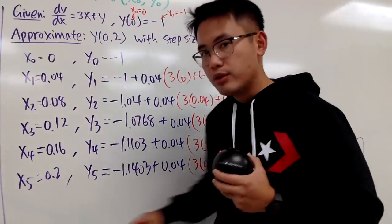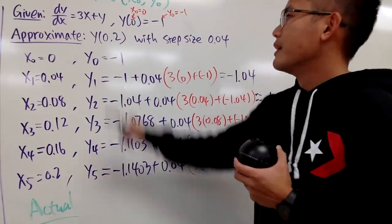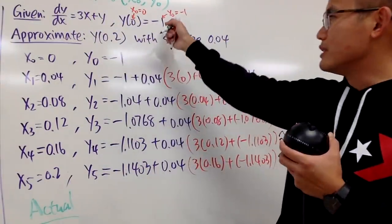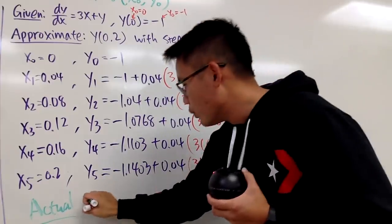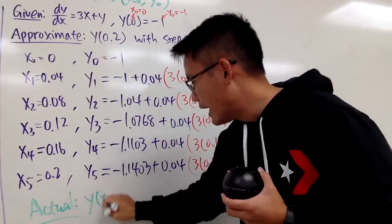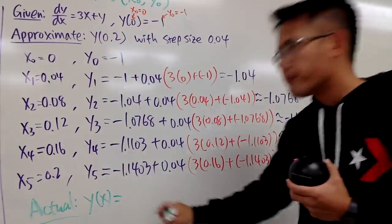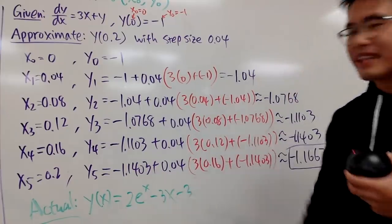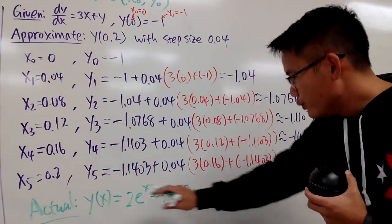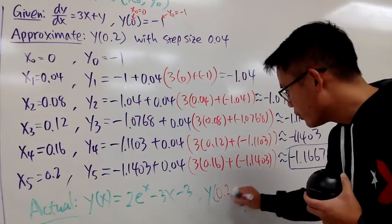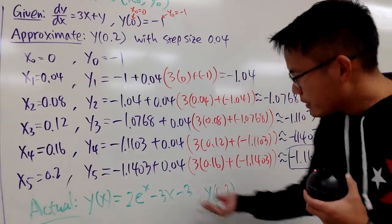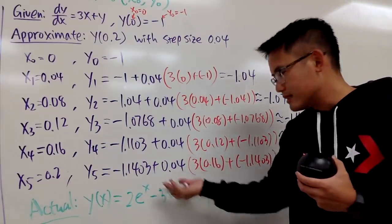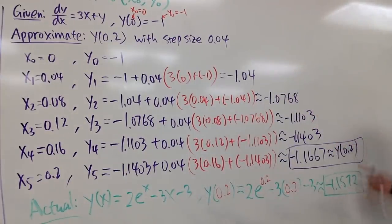Some of you will like to know that the actual solution to this differential equation with this initial condition is y of x equals 2 times e to the x minus 3x minus 3. If you use this to calculate y(0.2), you just plug in 0.2 into all the x, and you get a value which is pretty close to the approximation that we got. So the approximation is pretty good.